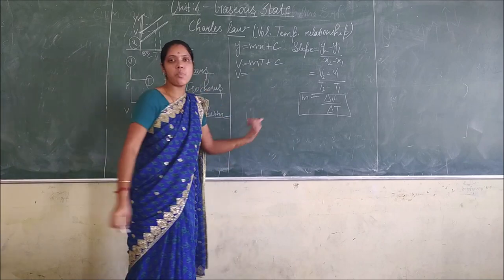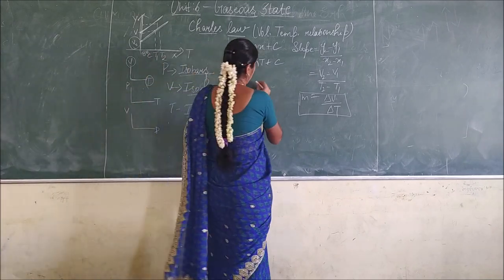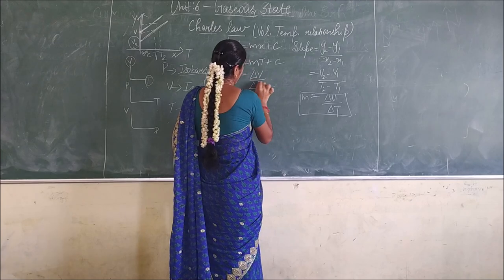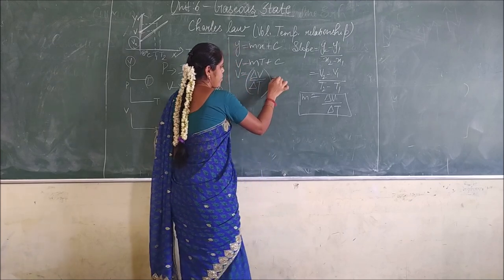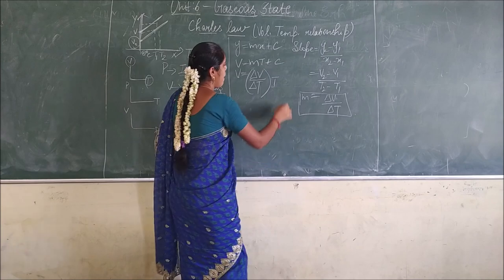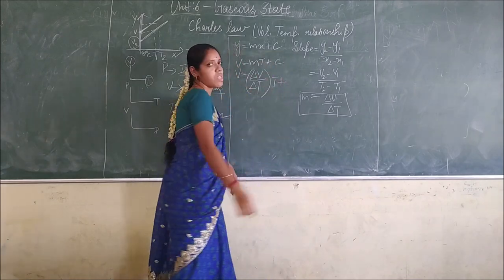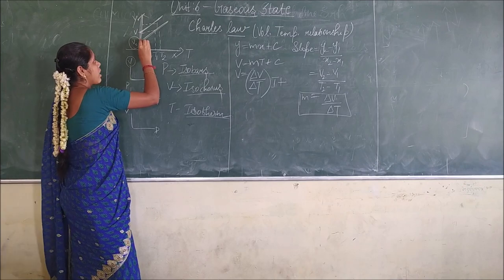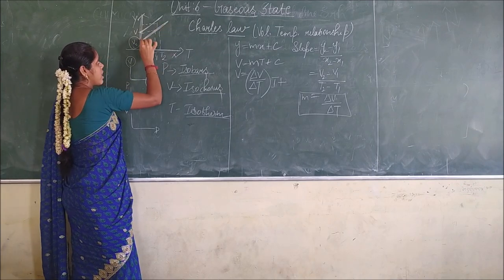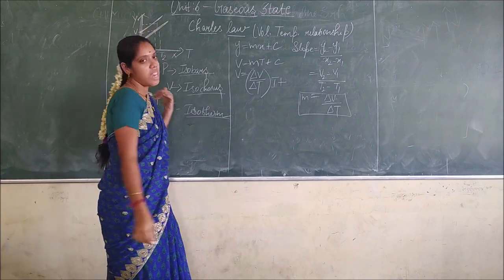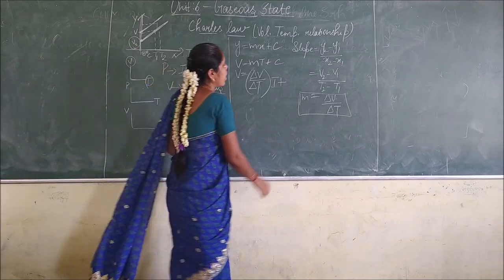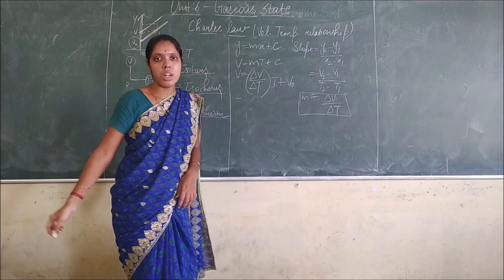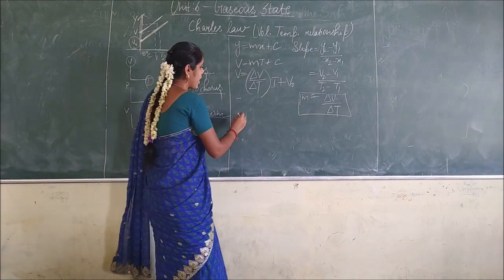Substitute this m-value into the equation. So what do we get? (ΔV/ΔT) × T + c. What is c here? It is the intercept — where the line meets. This is the intercept, and that is V₀. So next step, you divide it by V₀.